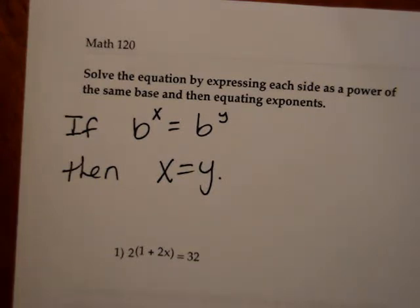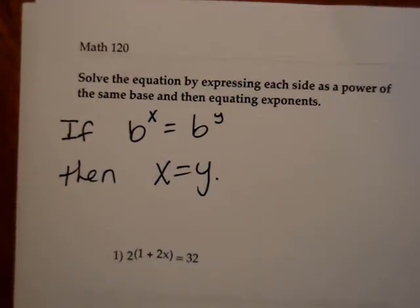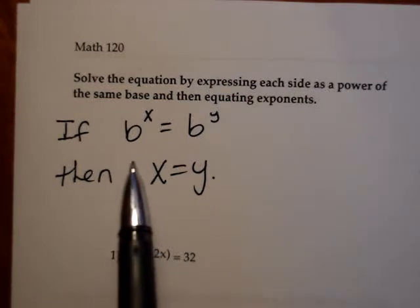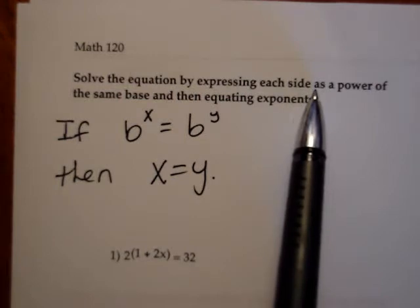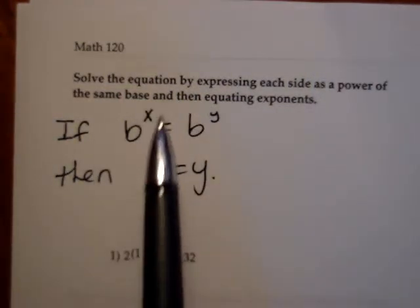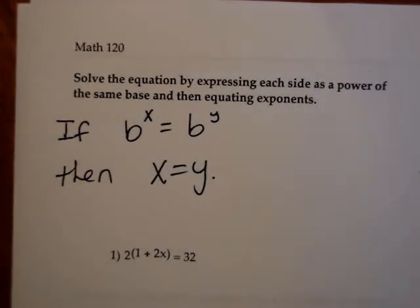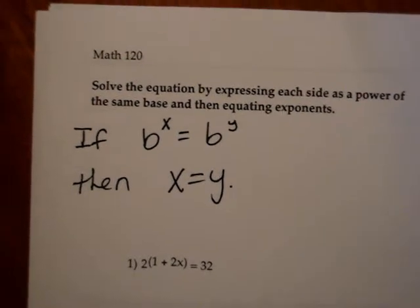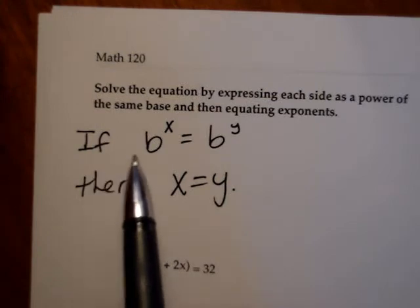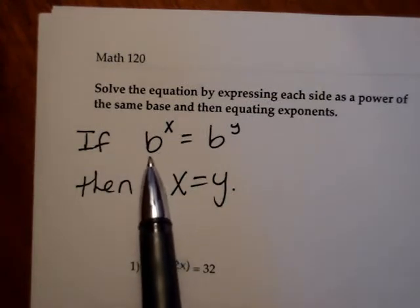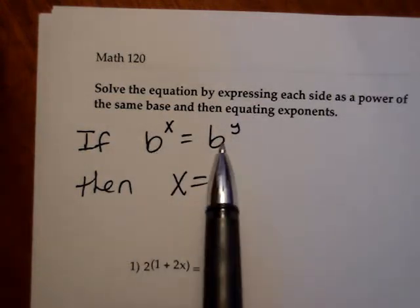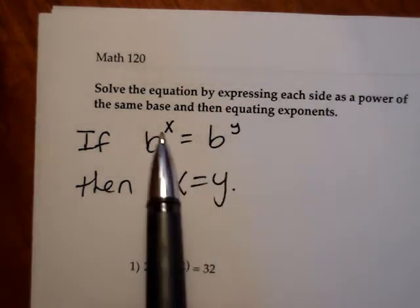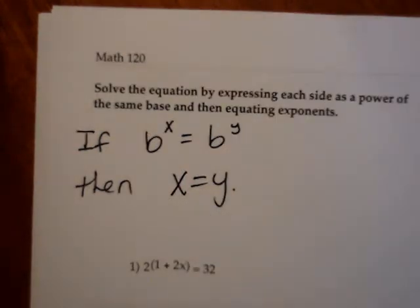Let's look at the very first type, which is my personal favorite. We want to solve these equations — read the instructions. Solve the equation by expressing each side as a power of the same base and then equating exponents. That means I want my equation to look like this: the same base on each side, each with an exponent. If the bases are equal, then the exponents have to be equal, or else they wouldn't be equal.